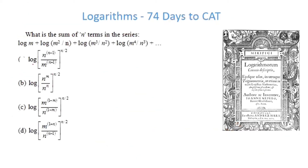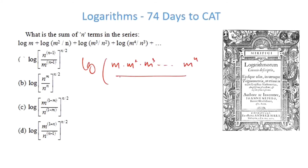Moving forward: what is the sum of n terms? With log in addition, within the logarithm the terms get multiplied — giving m · m² · m³ ... m^n divided by n · n² ... up to n^(n−1). There are n terms total, but since we start at n^0, it goes up to n^(n−1).